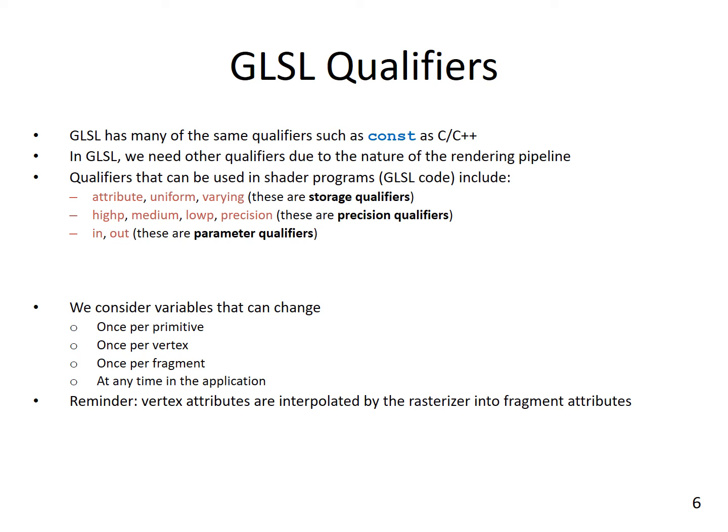Qualifiers that can be used in GLSL include storage qualifiers such as attribute, uniform, and varying, which are used to store data. We also have precision qualifiers such as high precision, medium, and low precision, and parameter qualifiers such as in and out. We consider variables that can change once per primitive, per vertex, or per fragment at any time in the application. Vertex attributes are interpolated by the rasterizer into the fragment attributes. The next lectures will cover storage qualifiers and precision and parameter qualifiers in more detail.